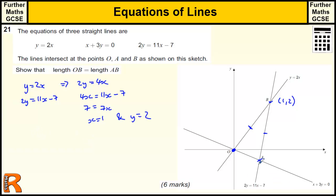Now to find this bottom coordinate here, we want to see where x plus 3y equals 0 and 2y equals 11x minus 7 intersect. So if I just change this equation, so I get x equals minus 3y. So I take the 3y over to this side as minus 3y and replace this x with minus 3y.